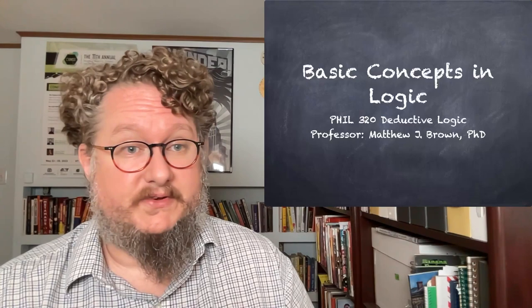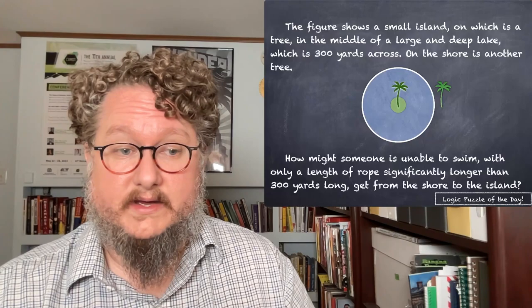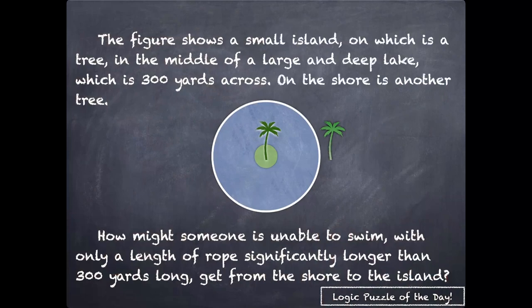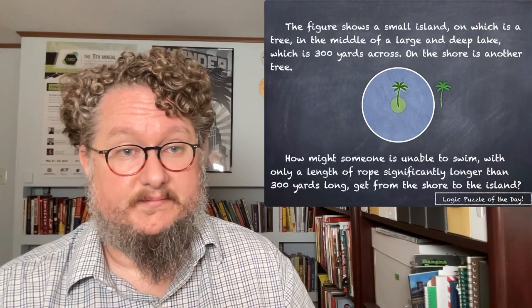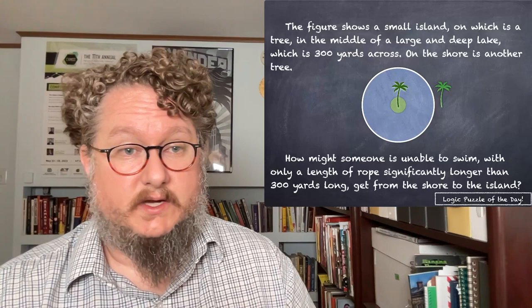Before we get into the content of today's lecture, I want to share another logic puzzle with you. The figure shows a small island with a tree in the middle of a large and deep lake, which is 300 yards across. On the shore is another tree. How might someone who is unable to swim, with only a length of rope significantly longer than 300 yards, get from the shore to the island? Keep that in mind as we go through the lecture, and we'll talk about it again at the end.